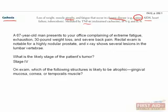On to question 2. On exam, which of the following structures is most likely to be atrophic? Gingival mucosa, cornea, or temporalis muscle? If you said temporalis muscle, you're correct. Based on this patient's advanced cancer and 30-pound weight loss, he's probably cachectic, and the typical manifestation of cachexia is muscle atrophy. In fact, temporal muscle atrophy — also known as temporal wasting — is a common clinical finding associated with cachexia.